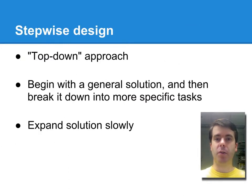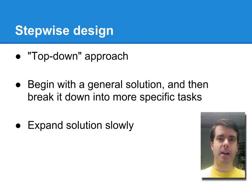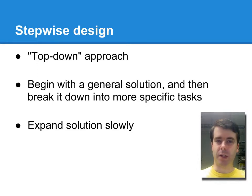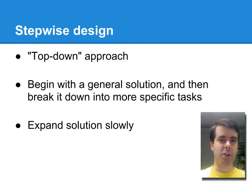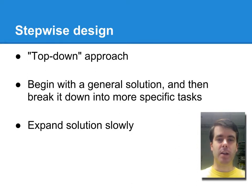To come up with that sequence of steps, we're going to use a technique called stepwise design. Stepwise design is a top-down approach, which means you begin at a high level with a very simple set of steps, and then you keep taking each one of those steps and breaking it down until you've written a set of instructions at the level that the computer can execute. You're going to expand your solution slowly — as you go from each level to the next, you only want to take each step and break it down into maybe three to five new instructions. If you expand it too quickly, you won't have a good sense of how your solution is developing.